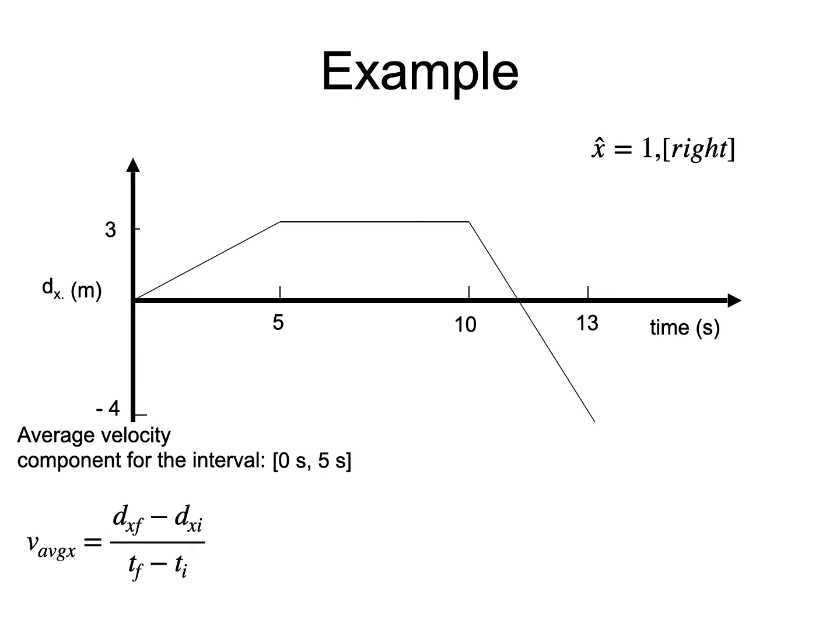Recall that the x-component of the average velocity is evaluated this way. If the time interval is from 0 to 5 seconds, you get from the graph that d_x is 3 meters at t equals 5 seconds and was 0 at t equals 0.